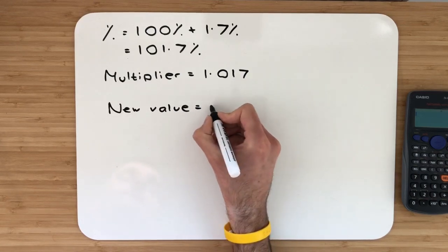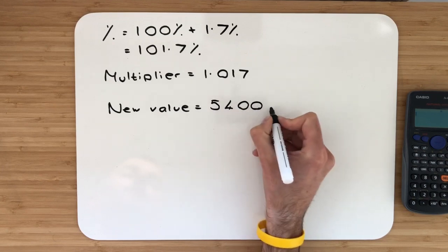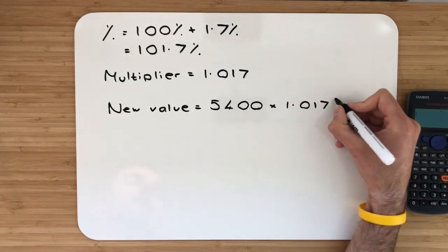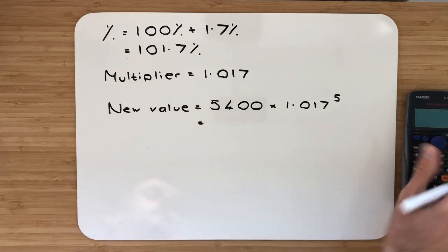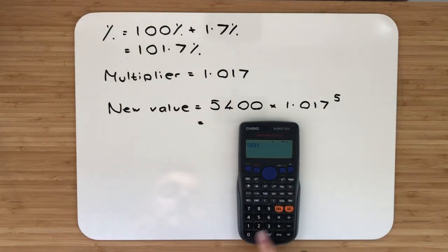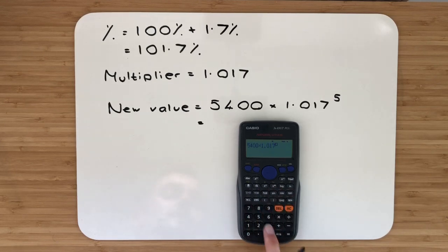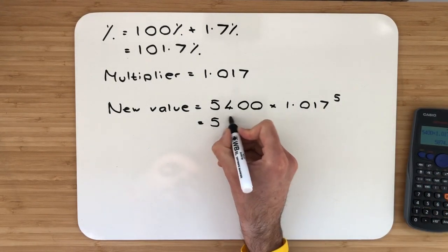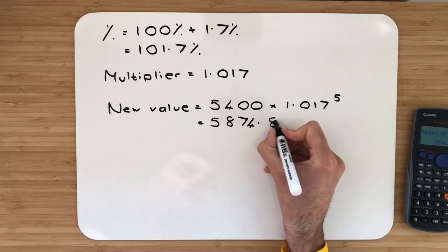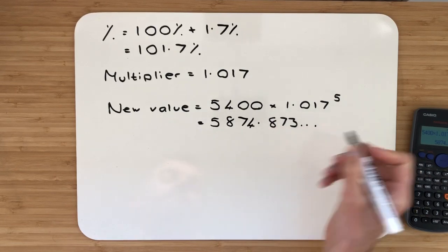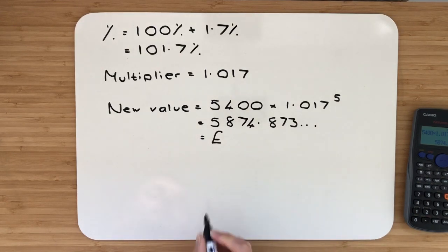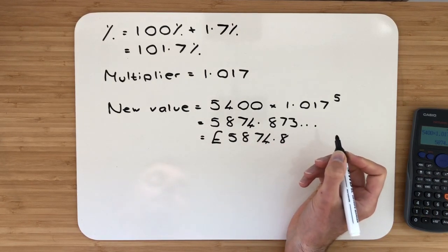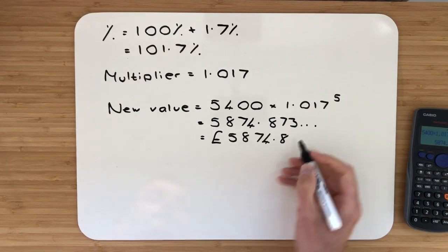Let's take our starting value. We had £5,400, and we will multiply that by 1.017. It's over five years, so I'll raise that to the power of five. Let's work out how much money we've got in the bank. In my bank, I should now have 5,874.873... and it just keeps on going. I will round that to two decimal places because it's money: £5,874.87.